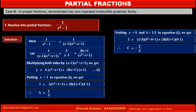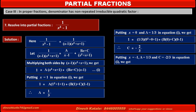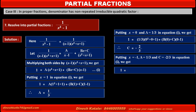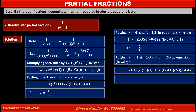By taking any convenient value of x and substituting the values of A and C, we can find B. Putting x equal to minus 1, A equal to 1 upon 3, and C equal to minus 2 upon 3 in equation 1, we get 1 equals (1 upon 3)(minus 1 squared plus minus 1 plus 1) plus (B times minus 1 plus minus 2 upon 3)(minus 1 minus 1). Solving, we get B equal to minus 1 upon 3.